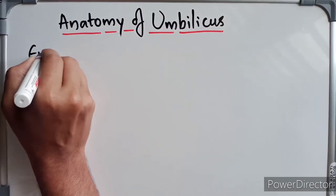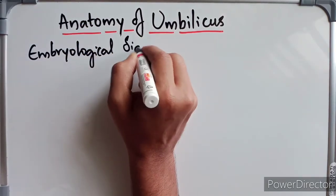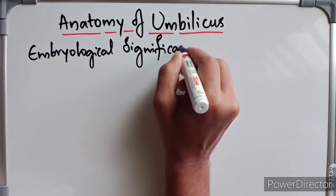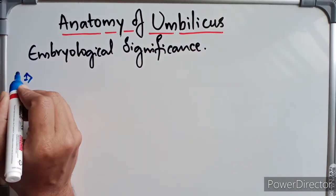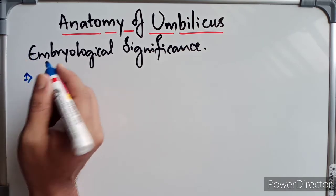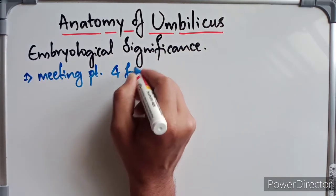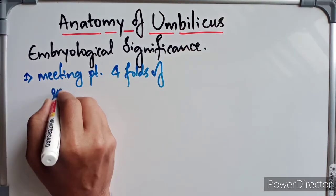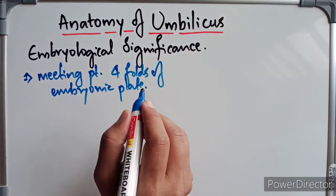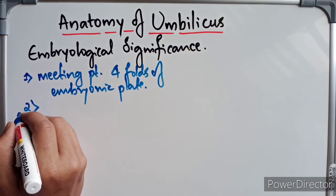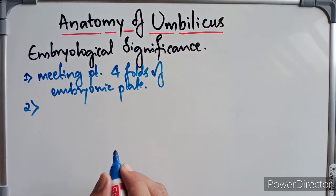Coming to the embryological significance: first, the umbilicus is the meeting point of four folds of the embryonic plate — two lateral folds, a head fold, and a tail fold. Second, in embryonic life a defect exists in the linea alba at this site called the umbilical ring, which provides passage to the following structures.